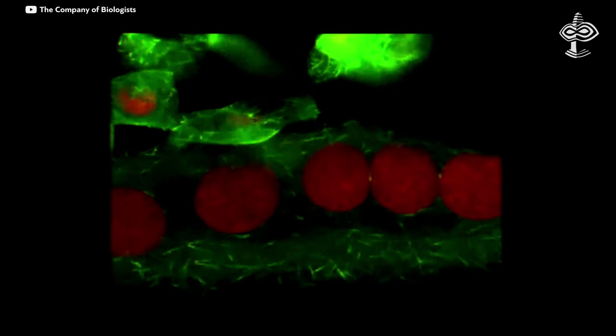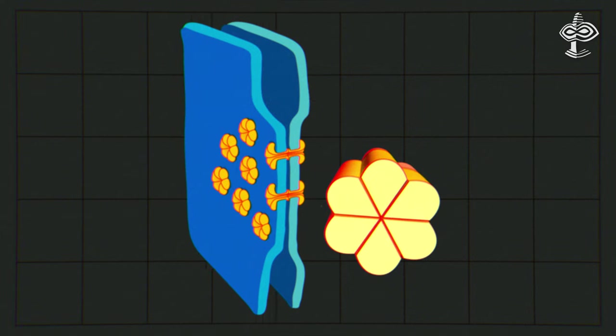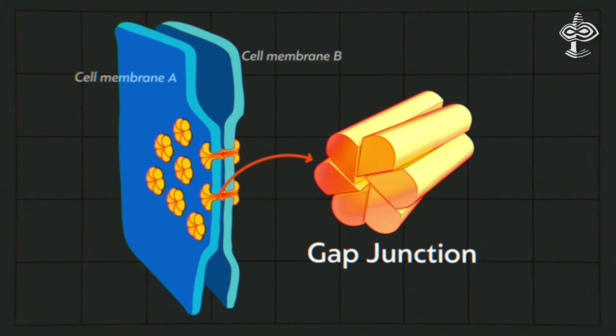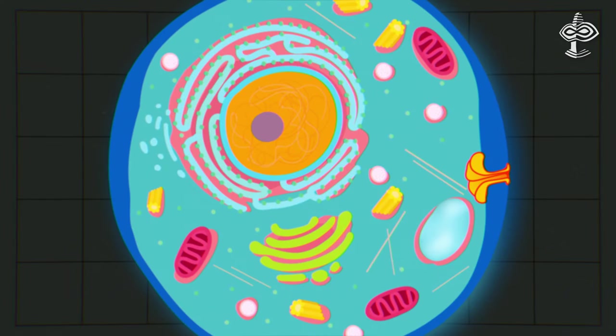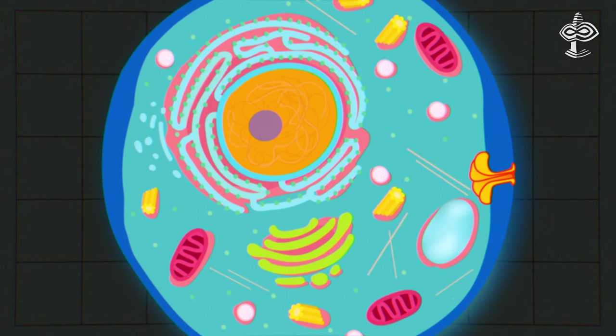A gap junction is something basically like a little tunnel that connects cells. According to Dr. Werner Lowenstein, the scientist who first proposed their existence,